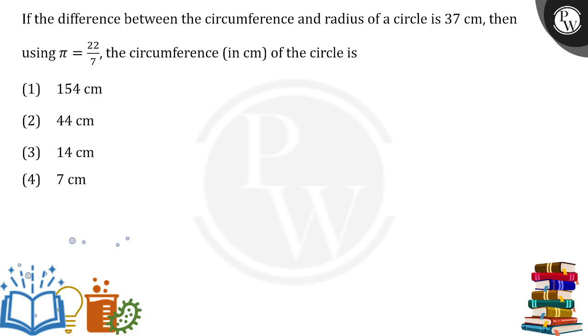The difference between the circumference and radius of a circle is 37 cm. Let's write this: circumference minus radius equals 37. So, 2πr - r = 37.